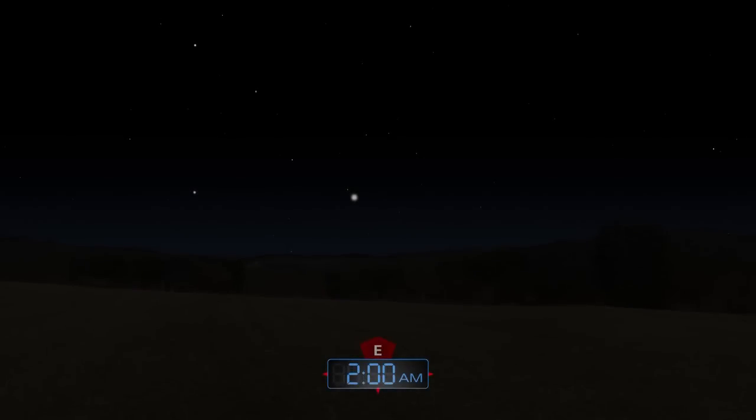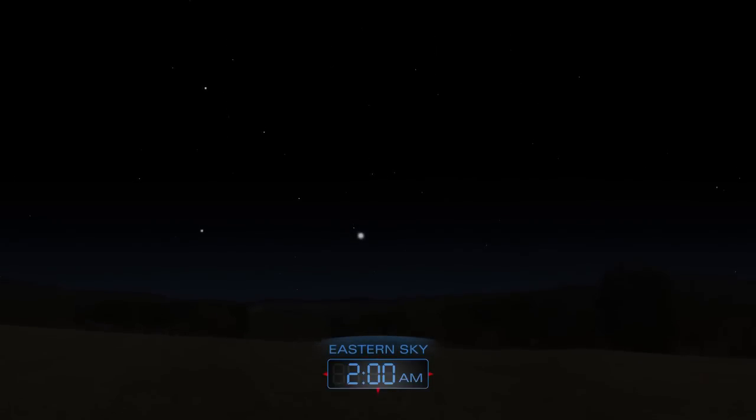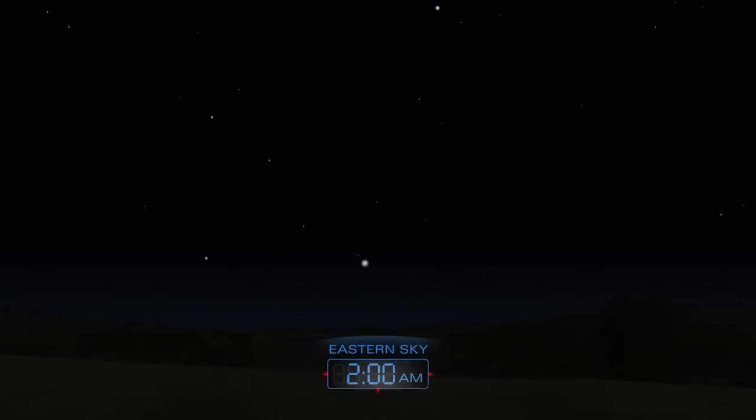November boasts the Leonid meteor shower. This shower is the result of Earth's annual passage through the dust trails left by Comet Temple Tuttle, which returns to the inner solar system every 33 years.